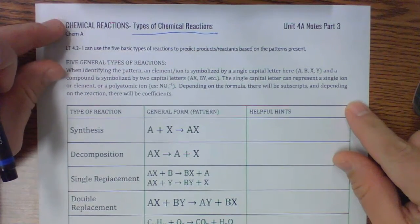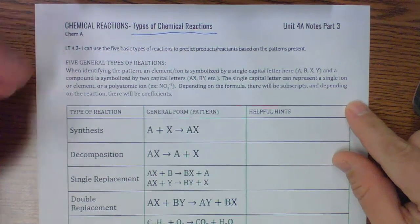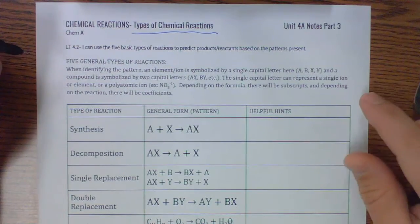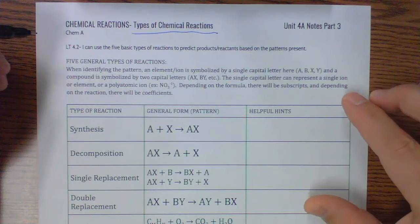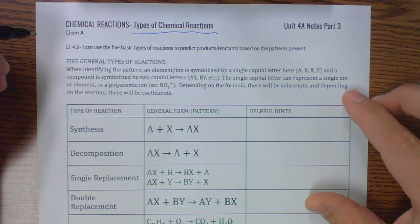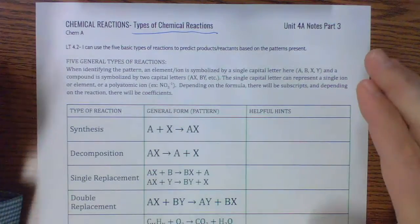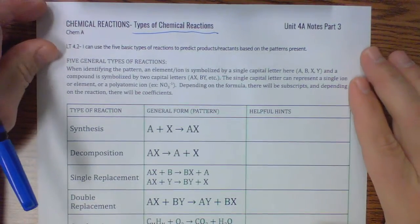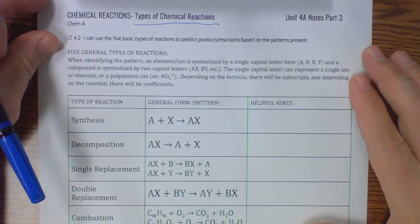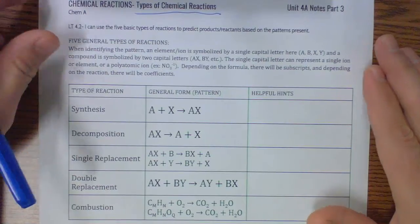This is your direct instruction video when it comes to the types of reactions. When we start to look at this, there are really five types of reactions that we'll see in chemistry. Most things can be broken down into these five types of reactions. Now we look at this in terms of some patterns.